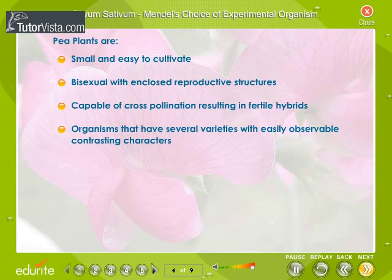Pea plants have several advantages over other species. They are small and easy to cultivate because of their rapid life cycles. The plants are bisexual with the reproductive structures being completely enclosed by the petals. This facilitates self-pollination, leading to the production of pure breeding varieties. Under controlled conditions, pea plants can be cross-pollinated, resulting in completely fertile hybrids.